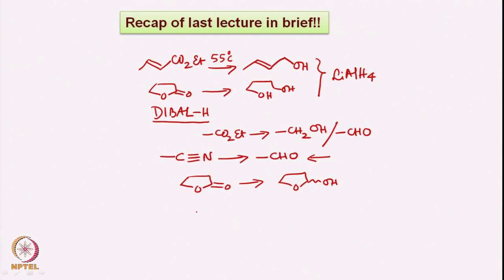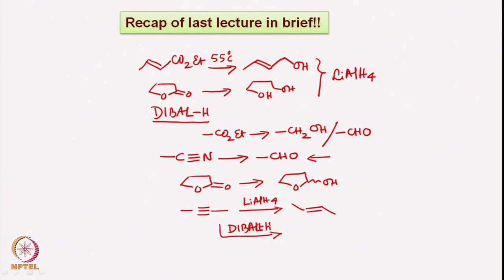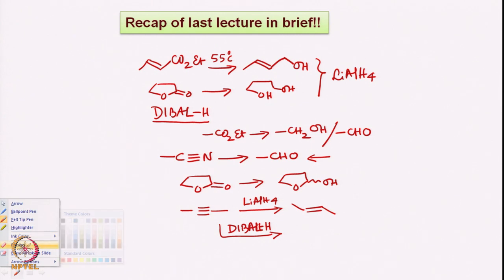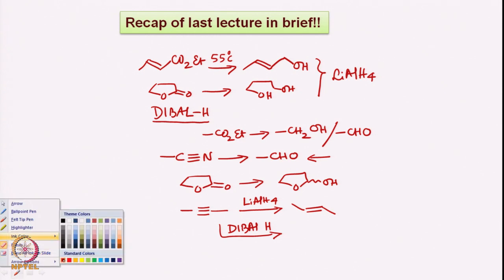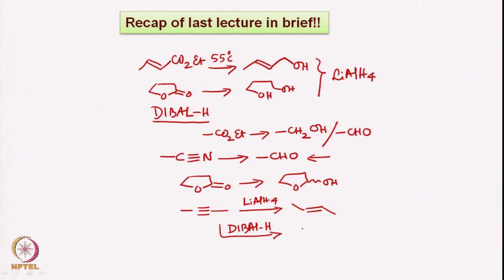Towards the end of the last lecture, we looked at the reduction of acetylene using lithium aluminum hydride, which led to the trans olefin. The same reaction can be done using DIBAL-H, which can be stopped at the olefin stage, but here the olefin is the cis olefin. So this is how we ended in the last class.